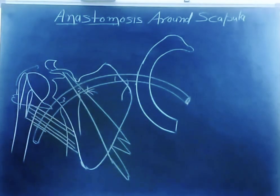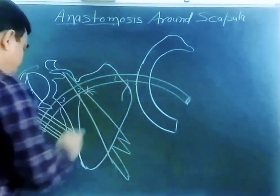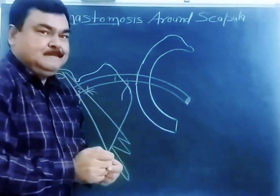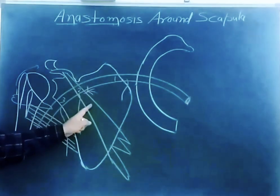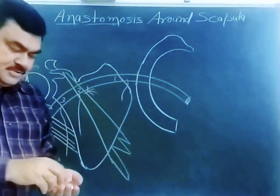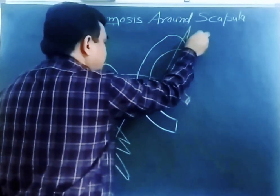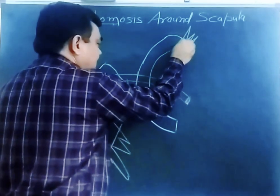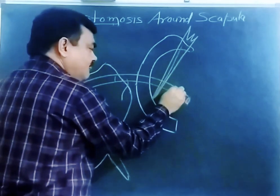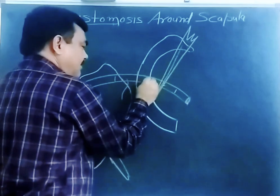The posterior circumflex humeral artery gives a branch going upward, the acromial branch. The subclavian artery is divided by the scalenus anterior muscle into three parts: the first part is medial to scalenus anterior, the second part is deep to it, and the third part is distal to it.